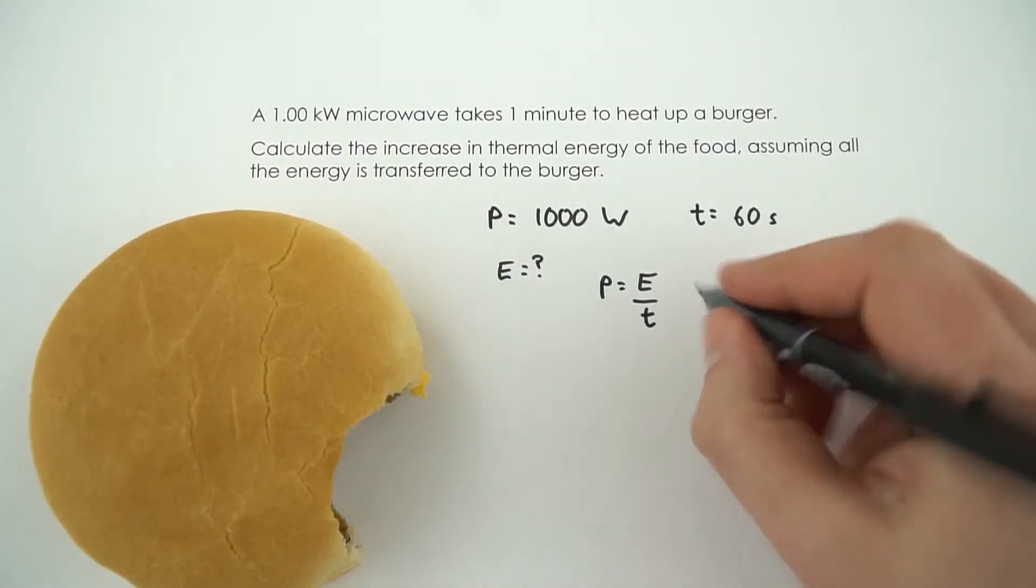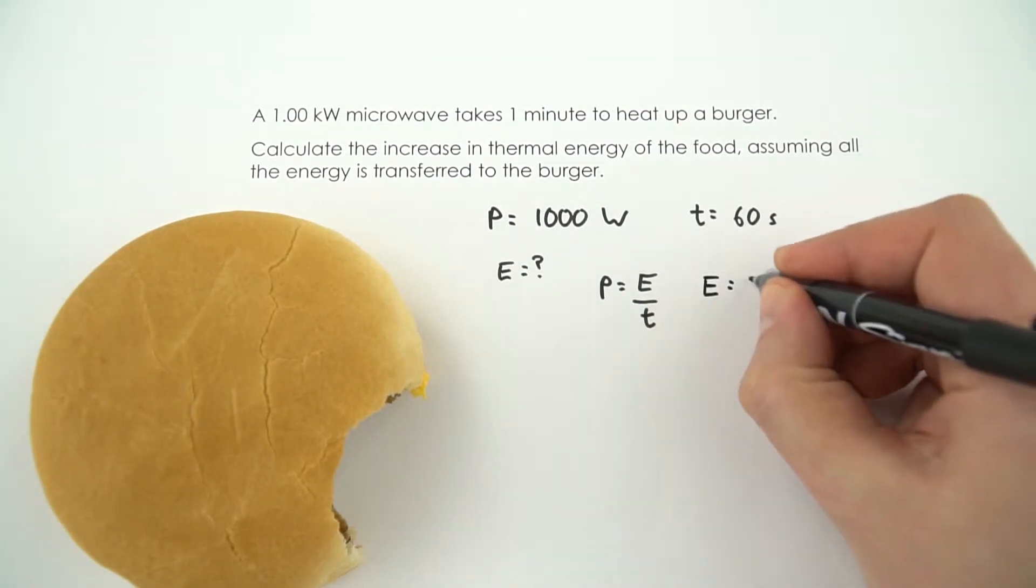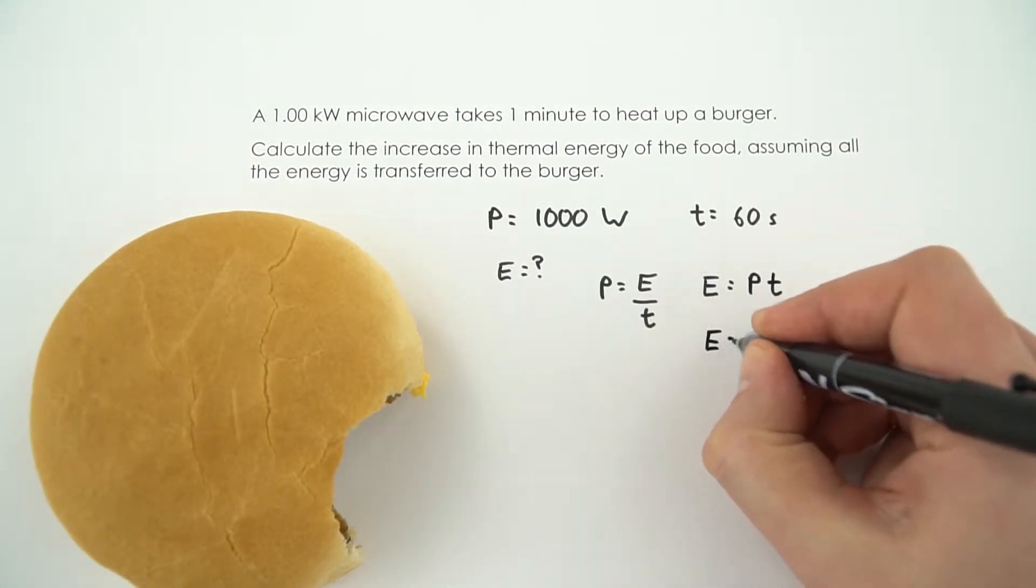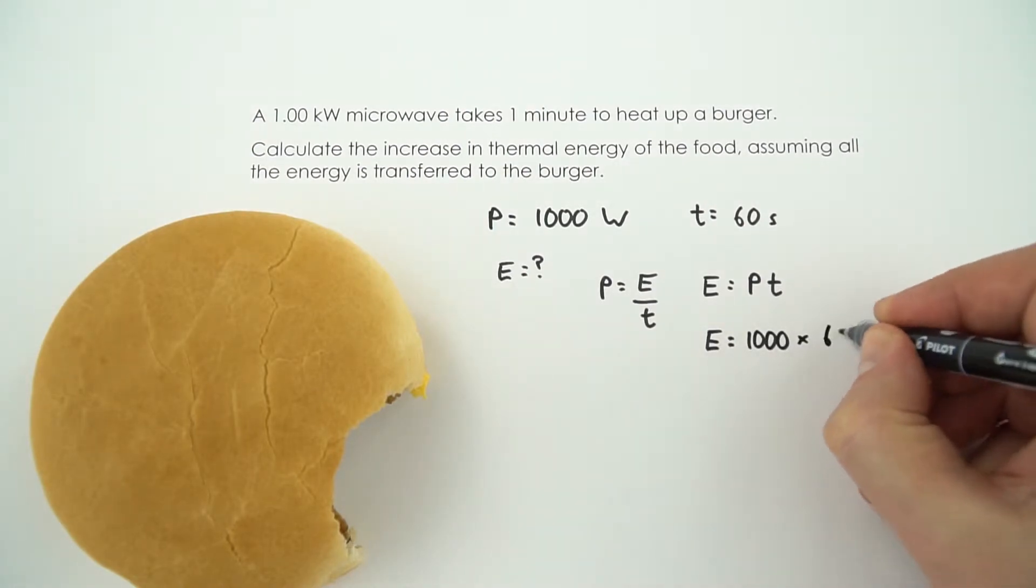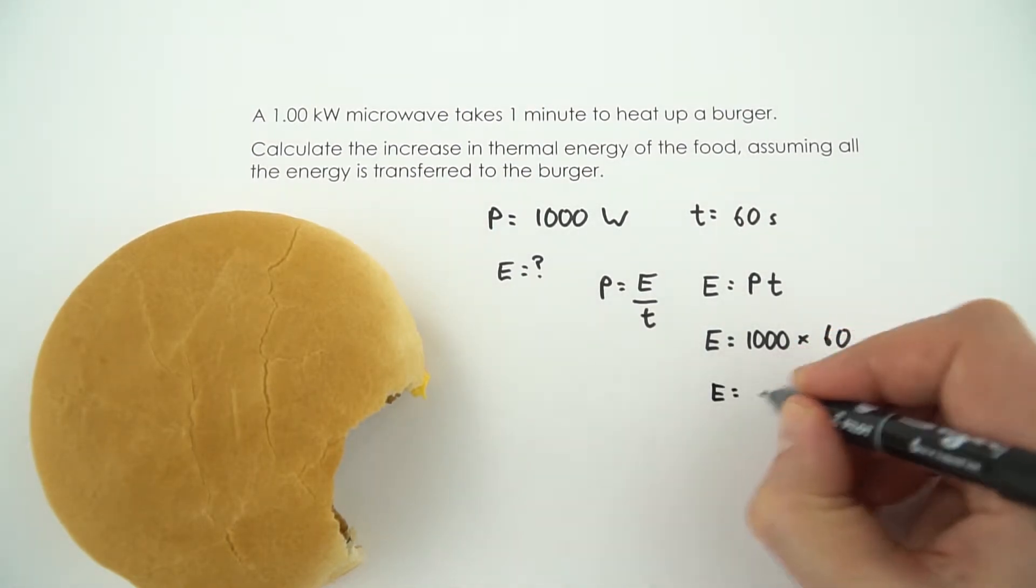And what we can then do is rearrange this to say that the energy transferred is equal to the power times time. So the energy transferred is going to be equal to 1000 times 60, which is then just 60,000.